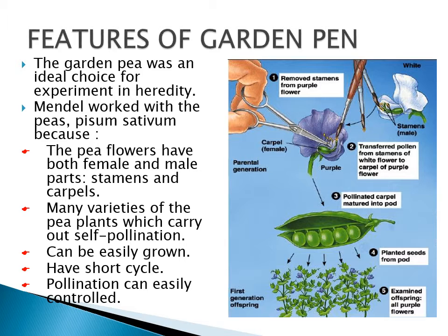He conducted experiments with several characteristics of the garden pea plant. First, he removed the stamen from the purple flower — the carpels are the female part and the stamens are the male part. He transferred the pollen from the stamen of the white flower to the carpel of the purple flower. This is the parental generation. The pollinated carpel matured into pods, and the seeds from the pods were planted. The first generation of offspring, all purple flowers, were formed and examined.